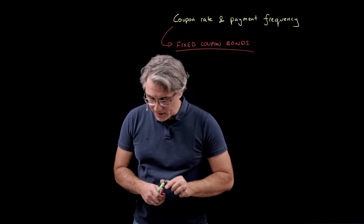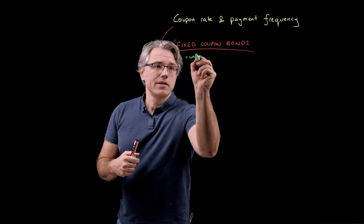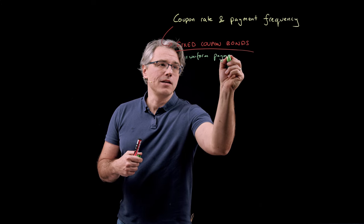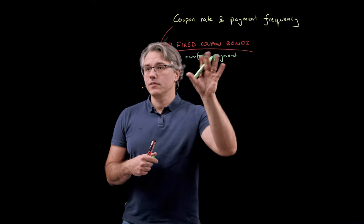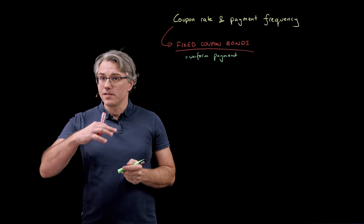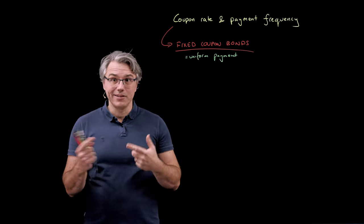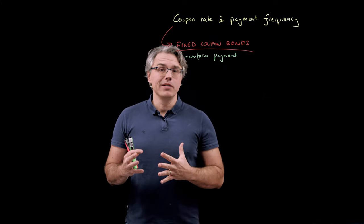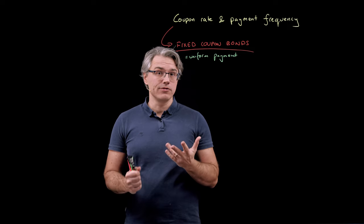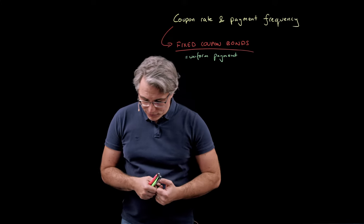Fixed coupon bonds provide for a uniform payment. As the name suggests, there's going to be a fixed or uniform payment happening with a certain frequency — it could be annually, semi-annually, quarterly, or even monthly from issuer to investors. In a moment we'll have an opportunity to see how we calculate the size of a coupon.